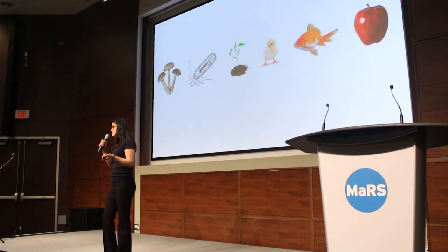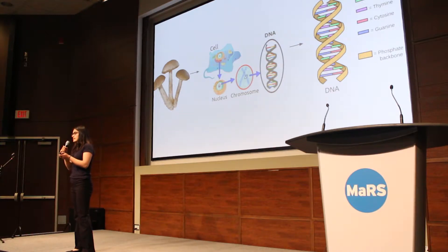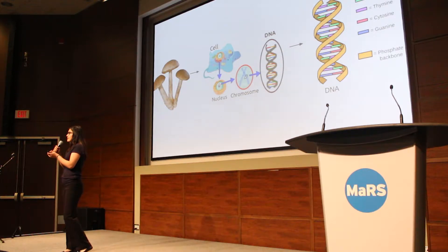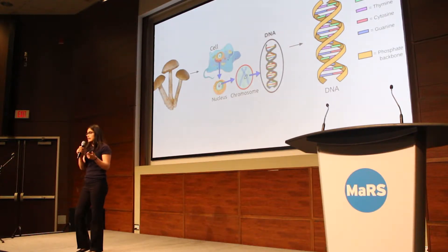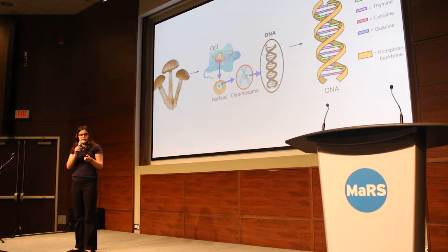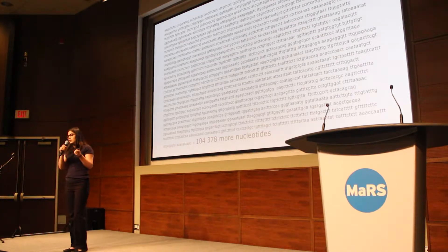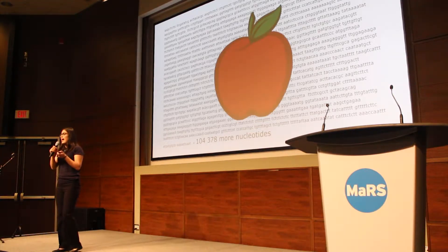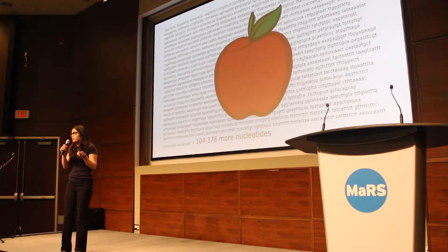The entire world is made up of living things, and within every living thing there are cells, and within every cell there's genetic information — DNA. DNA is composed of four nucleotides: adenine, guanine, cytosine, and thymine. A connects with T and G binds with C. If you create long sequences of these nucleotides you get a chain of DNA, and this is actually the chain for an apple.